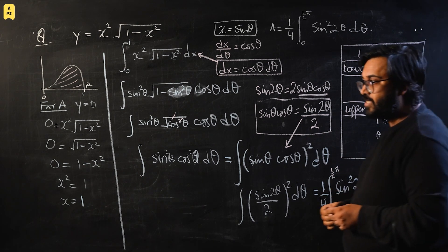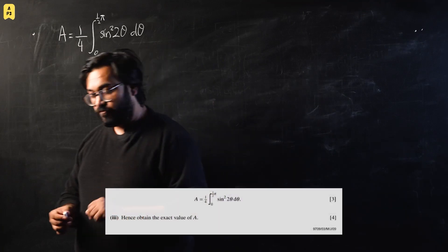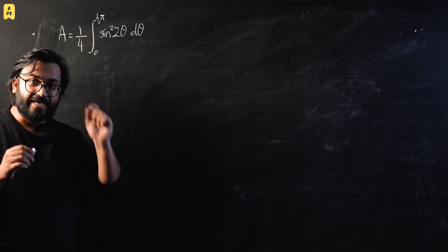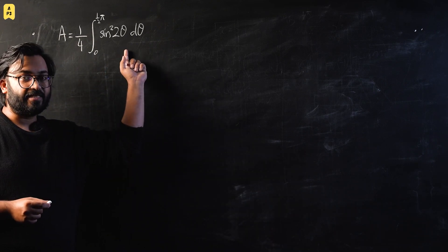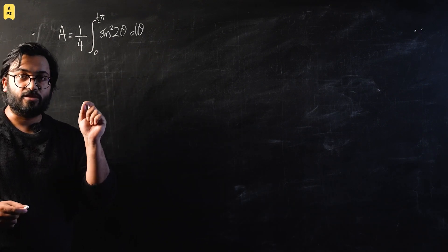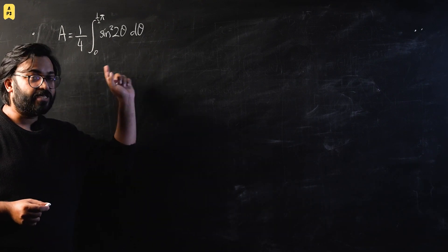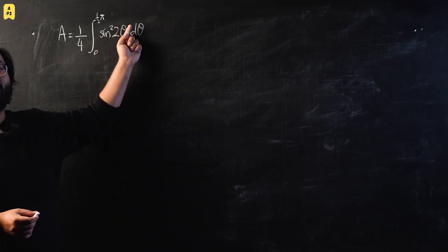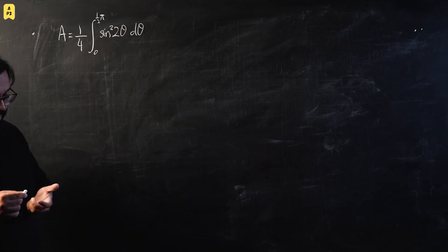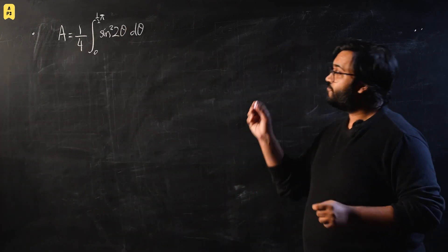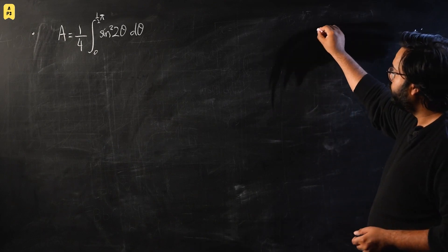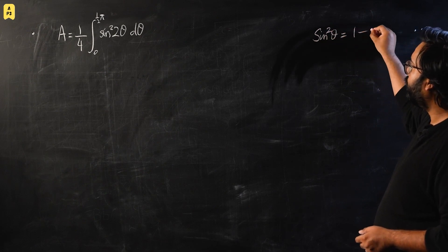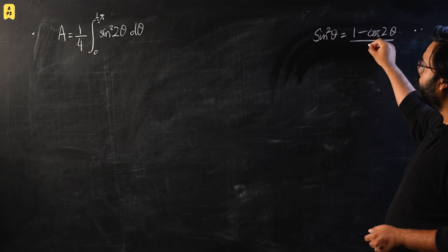For the third part, we have to evaluate this integral. Many students find this difficult. You must remember the identity for integrating sine squared theta: sine squared theta equals (1 minus cos 2theta) divided by 2. We have sine squared 2theta, so we replace theta with 2theta in the identity, giving sine squared 2theta equals (1 minus cos 4theta) divided by 2.